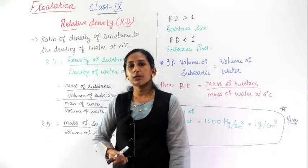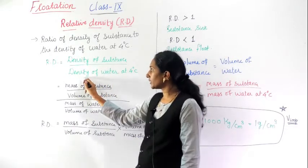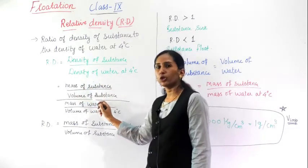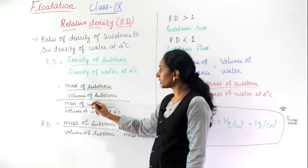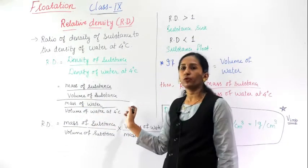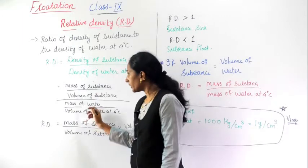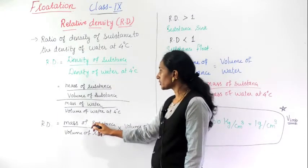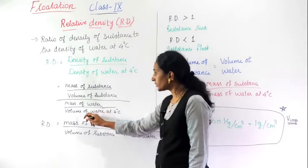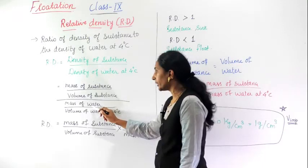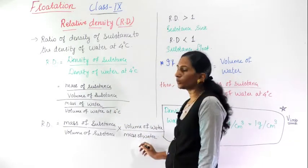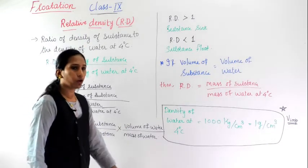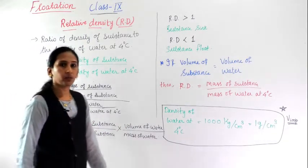Since density is mass per unit volume, we can expand this formula. The density of the substance becomes mass of substance divided by volume of substance, and the density of water becomes mass of water divided by volume of water at four degrees Celsius. Rearranging, this gives us: RD equals mass of substance divided by volume of substance, multiplied by volume of water divided by mass of water.